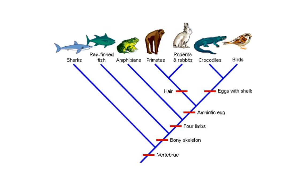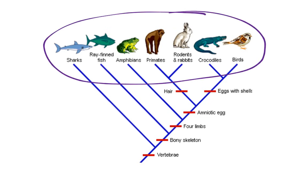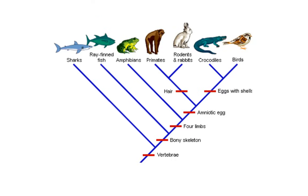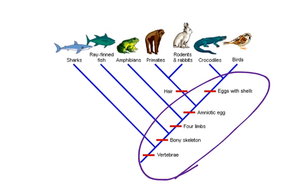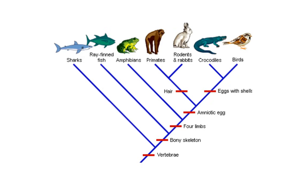A few features of cladograms: up at the top you will always have the different organisms that you're looking at, and you'll have the names of those organisms. And then along the side of the cladogram, you will usually have different characteristics, and these characteristics are what separate the various organisms from one another.